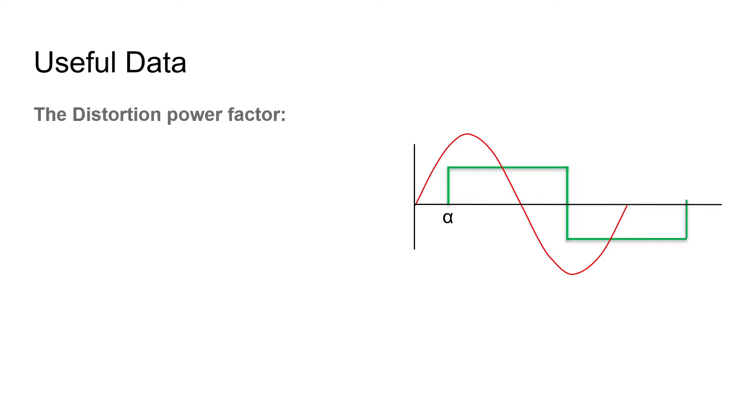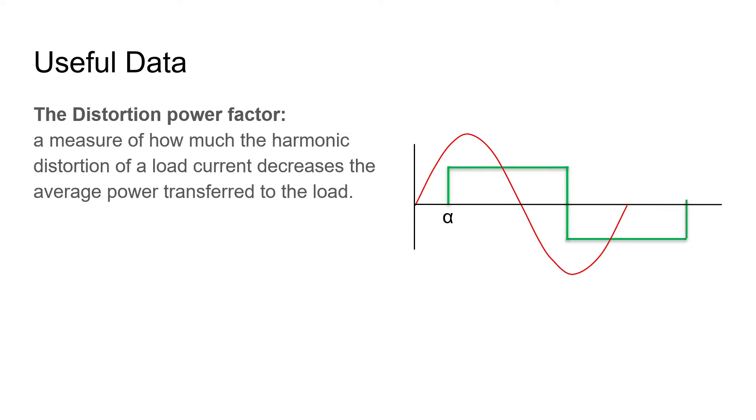The distortion power factor. It is the measure of how much the harmonic distortion of the load current decreases the average power transfer to the load. As shown in the figure, the green dotted line shows the fundamental component of the square wave current that is shown by the green solid line.